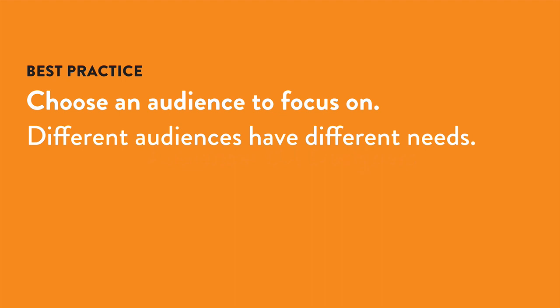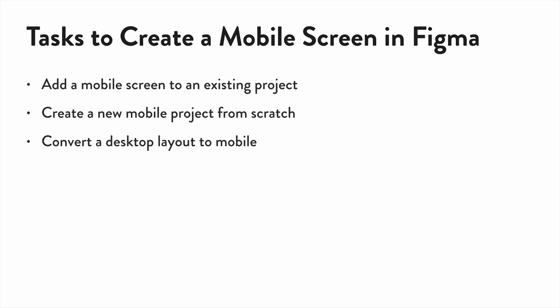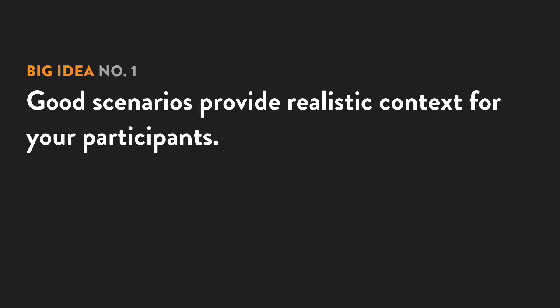Once you have a goal and an audience, you can create a list of related tasks. The third step is to choose the most important ones and turn them into scenarios. Scenarios allow participants to put themselves into context. For a good usability test, you want about three to five fairly involved scenarios, one per task.